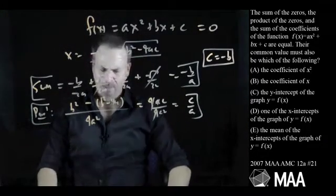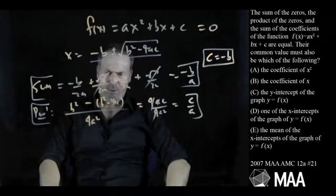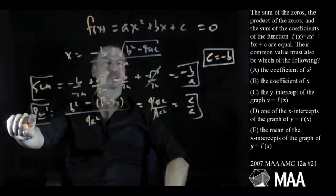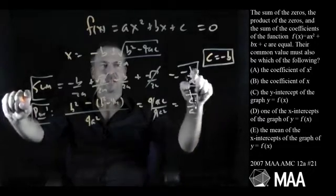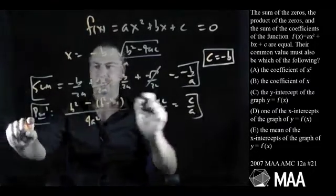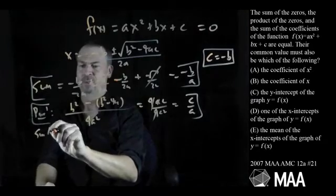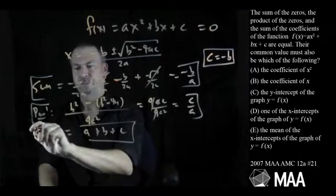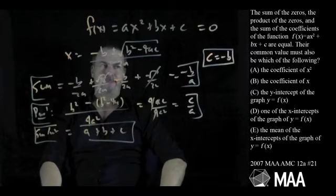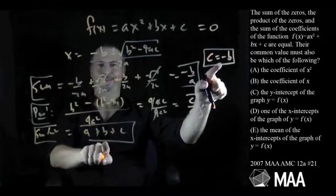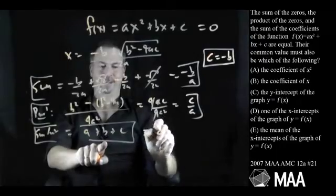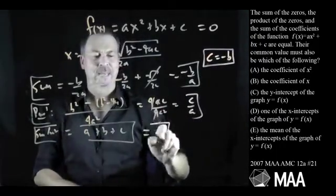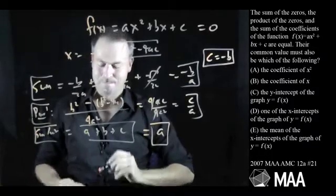Now what? What was the question? The sum of the zeros and the product of the zeros and the sum of the coefficients are all equal. Oh so this thing equals this thing equals the sum of the coefficients which is a plus b plus c. C is negative b. This is just a.